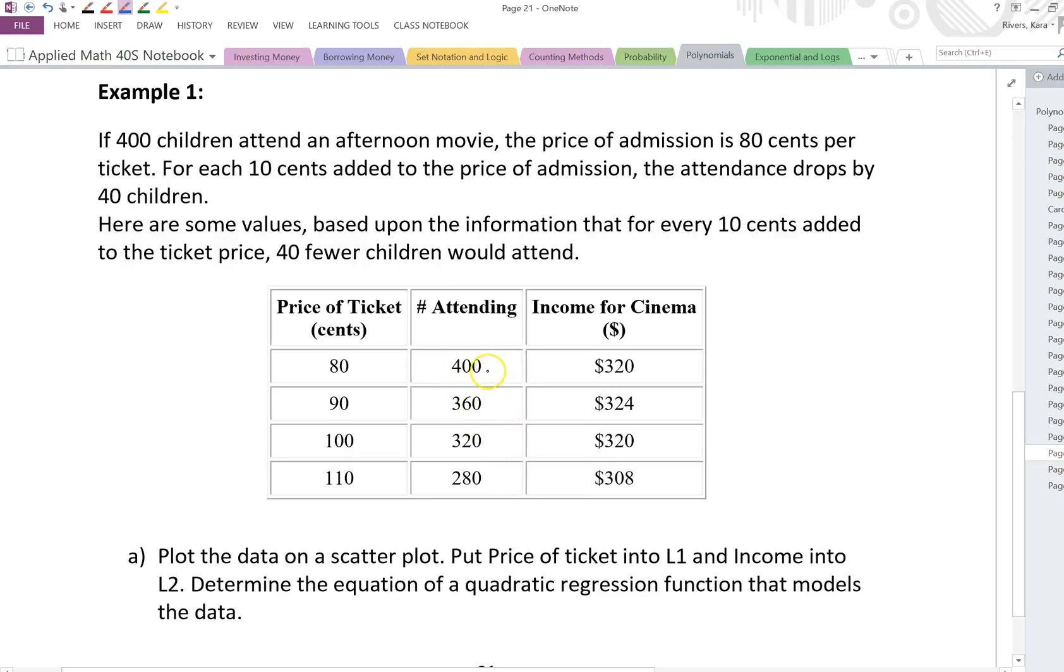So how do they get that value? 80 times 400 gives you $320. 90 times 360 gives you $324, and so on. So you can see we've got that 10 cent increase, and that dictates how many people are attending. You charge more per ticket, less people show up. You charge even more, even less people show up. But how does that affect our income? Well, our income, $320, $324, but then back down to $320, $308. So before we even look any further, we can see that our data starts low, goes up, and then goes back down again. So what kind of function is that? Well, that to me would look like a quadratic. You're starting low, going high, and then coming back down.